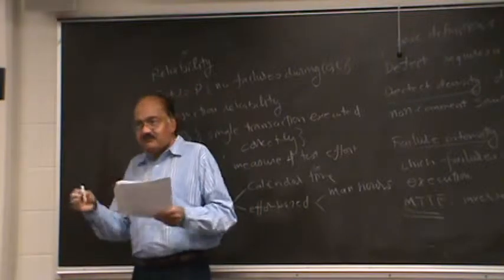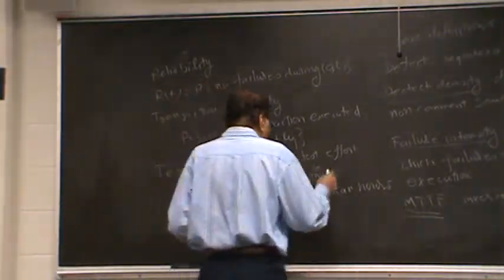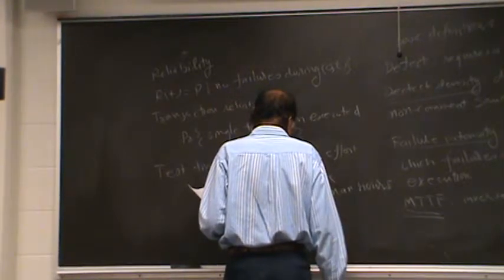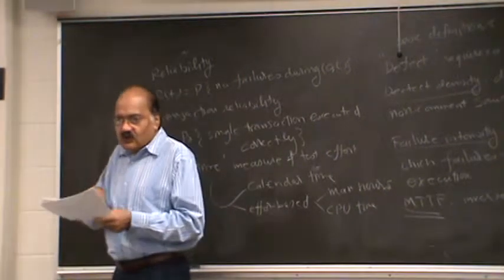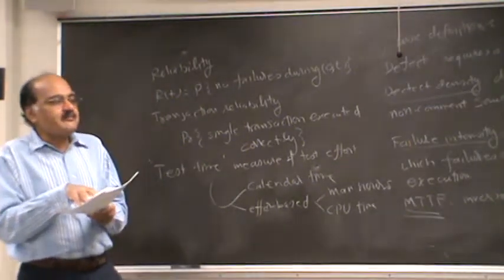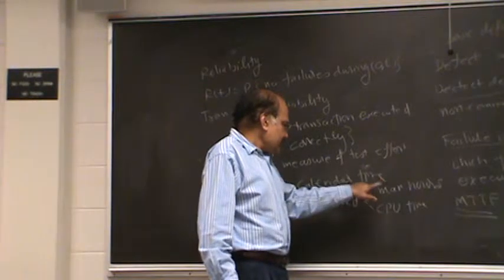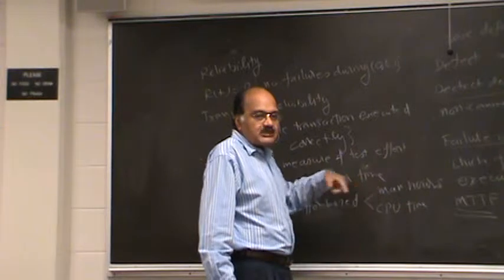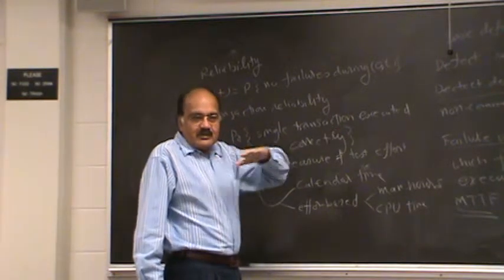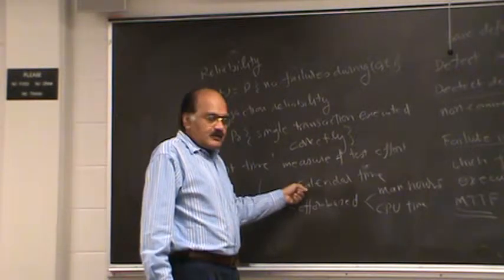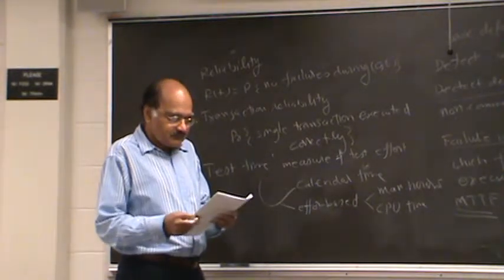For example, it might be better to use person hours. But I guess people have been using the term man hours. And then CPU time. This is another good one. So you record the CPU execution time that you have spent doing testing, and that would be a good measure. So whenever you say test time, we are assuming you are using some suitable measure of time.